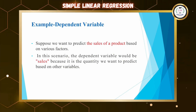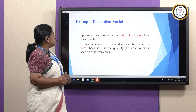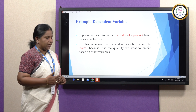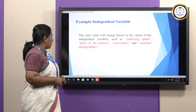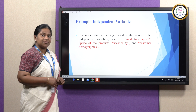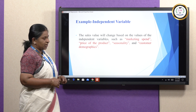Suppose we want to predict the sales of a product based on various factors. In this scenario, the dependent variable would be sales, because it is the quantity we are going to predict. The sales value will change based on the values of the independent variables such as marketing spend, price of the product, seasonality, and customer demographics.